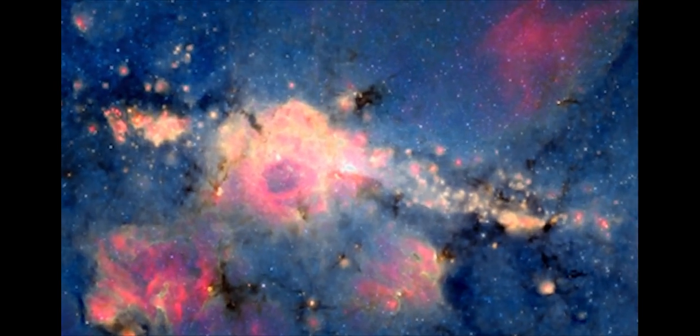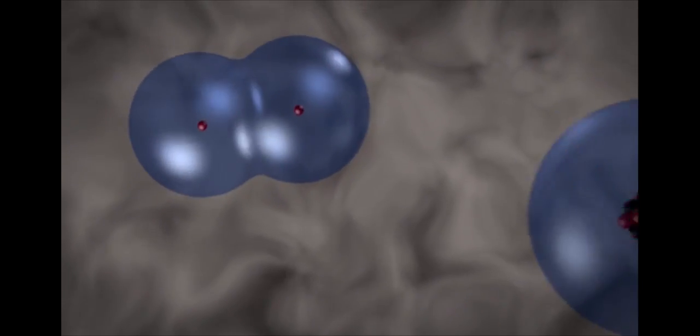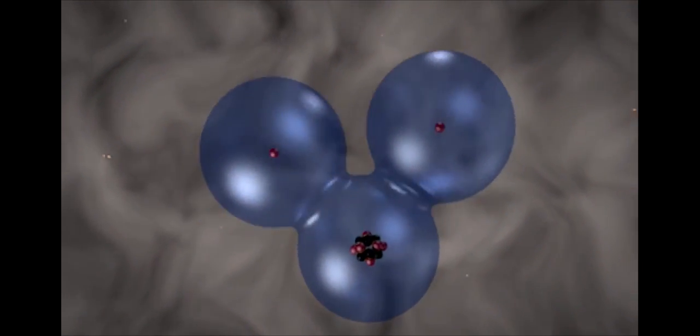When stars reach the end of their lives, they expel their outer layers back into the interstellar medium, the ultimate example of cosmic recycling. Over time, these atoms, representing the full diversity of the periodic table, spontaneously react with one another, catalyzed by the cosmic radiation originating from stars, black holes, and cataclysmic events all around us.